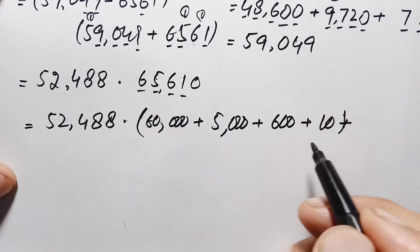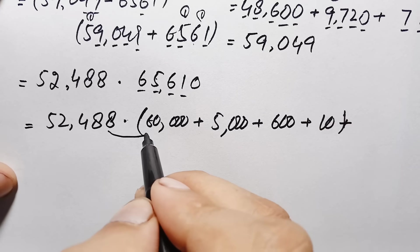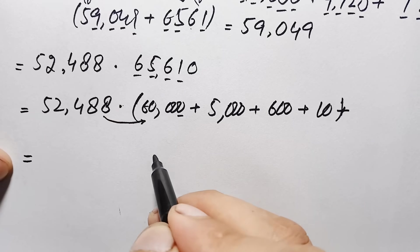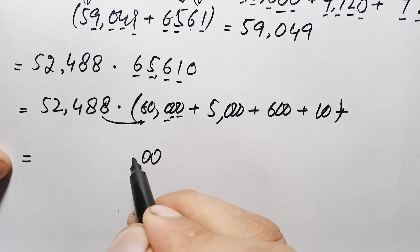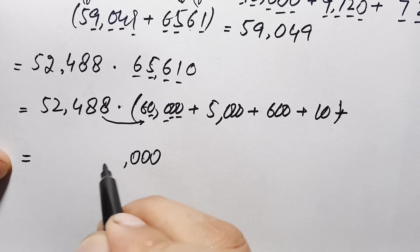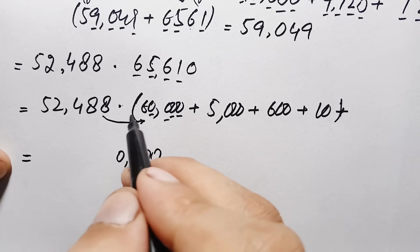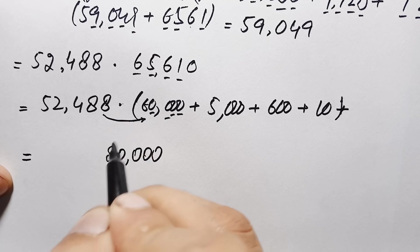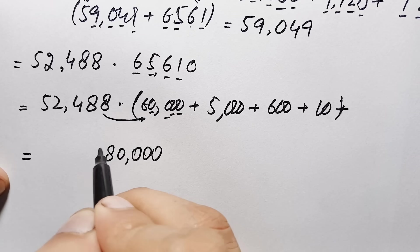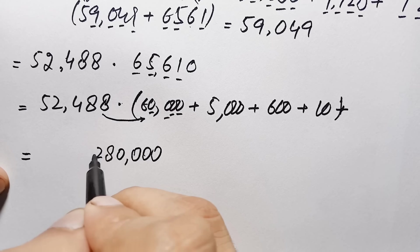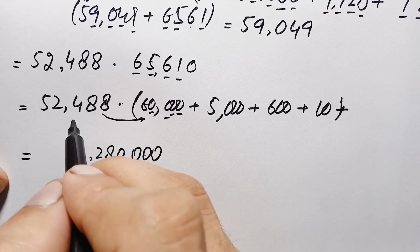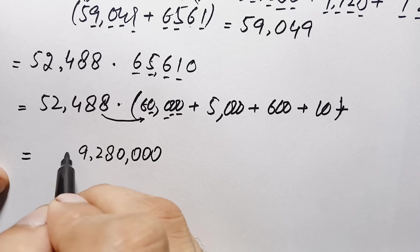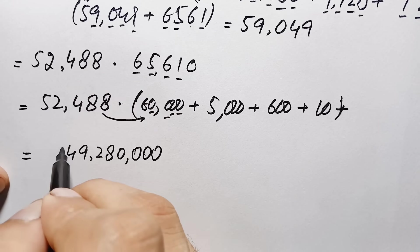First, multiply 52,488 by 60,000. Multiplying by 6: 6 times 8 is 48, write 8 carry 4; 6 times 8 is 48 plus 4 is 52, write 2 carry 5; 6 times 4 is 24 plus 5 is 29, write 9 carry 2; 6 times 2 is 12 plus 2 is 14, write 4 carry 1; 6 times 5 is 30 plus 1 is 31. Appending three zeros gives 3,149,280,000.